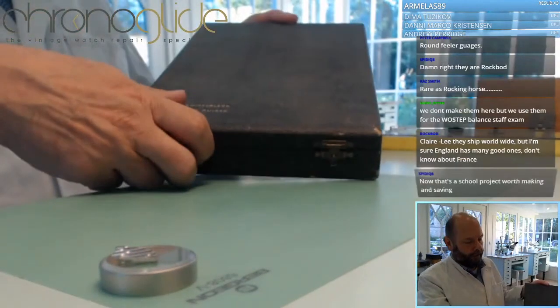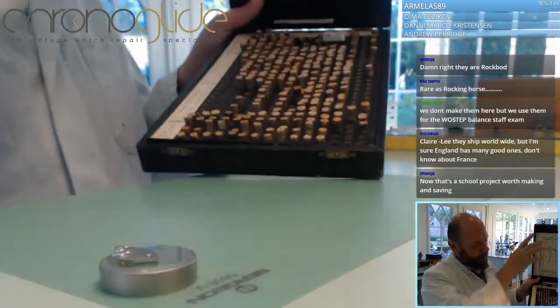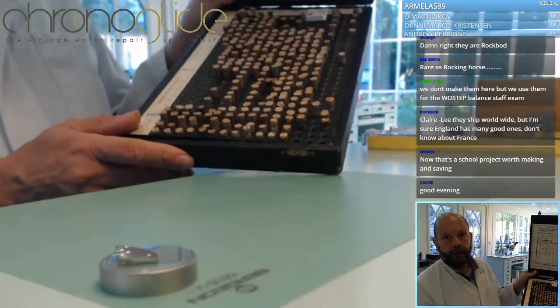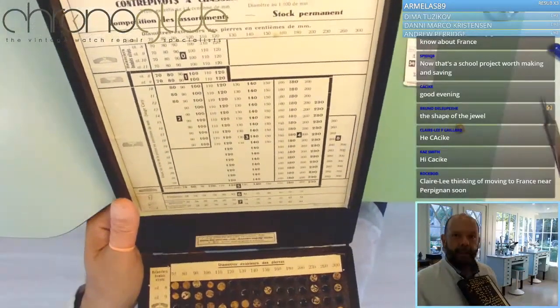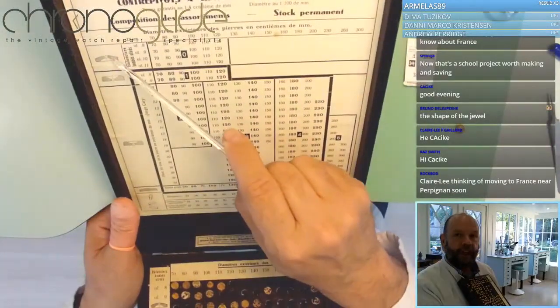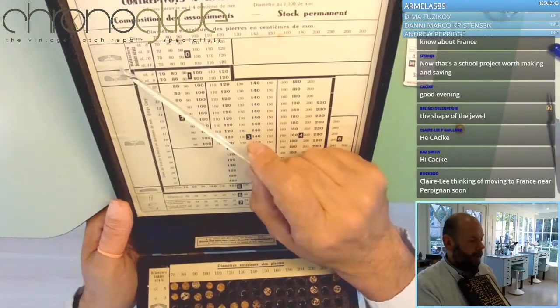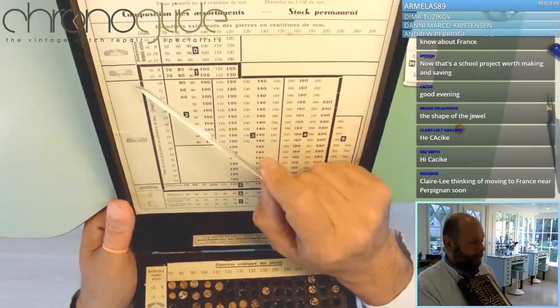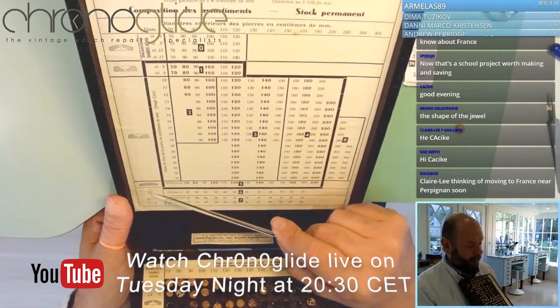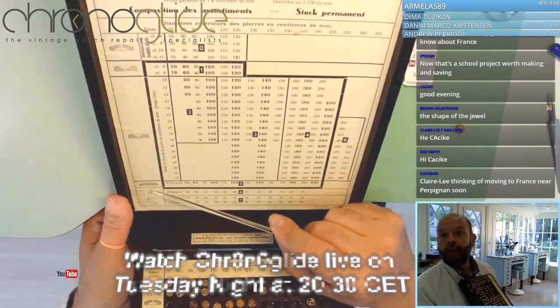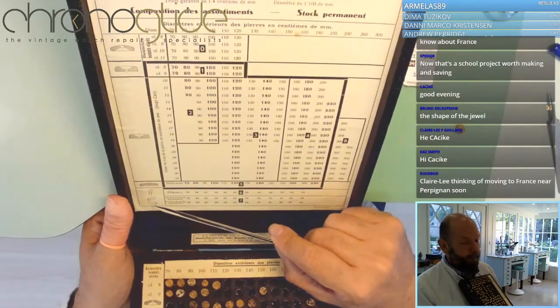We are lucky enough to have several of these assortments. This assortment is even bigger. Here are the different shapes of the jewels - this one is for a balance wheel, smaller ones, and those are the cap stones. The D shape of the impulse stone, and here are the tests for the pallet fork.